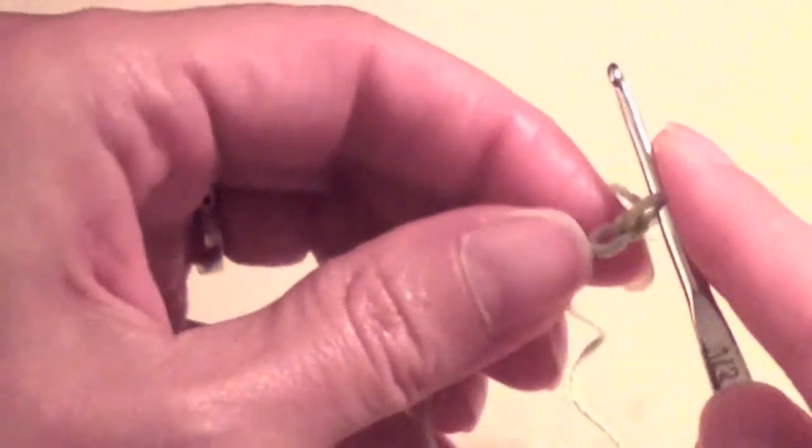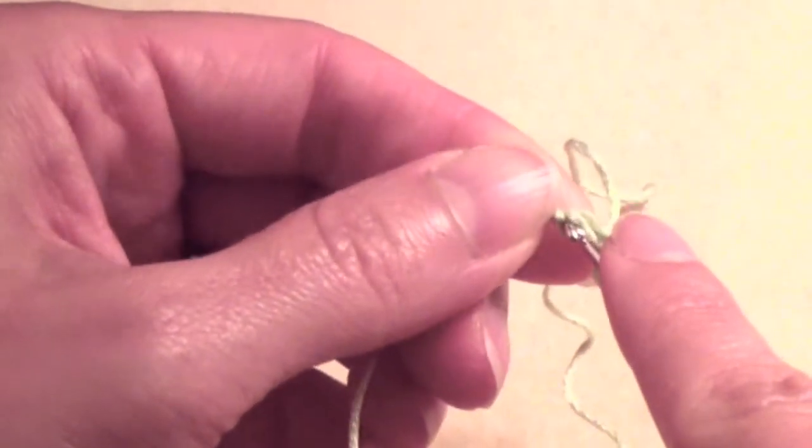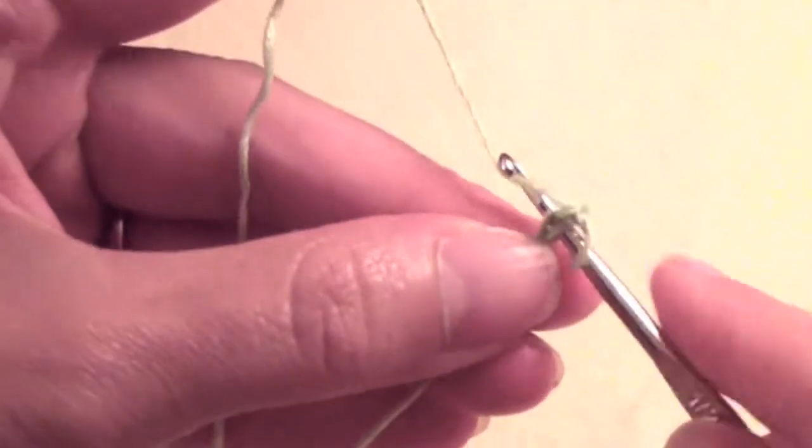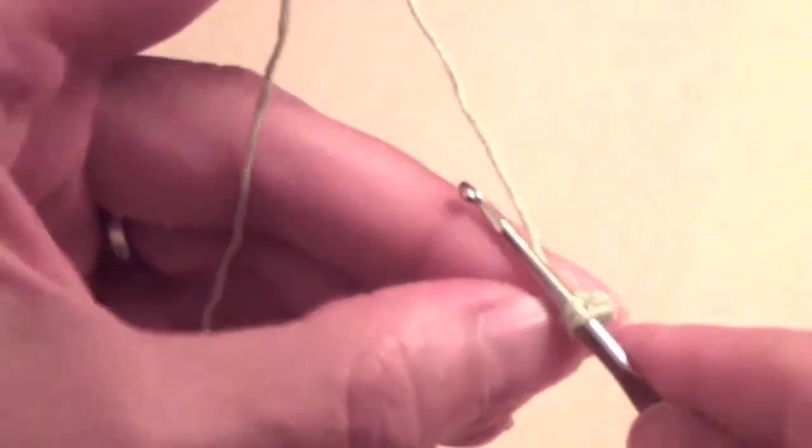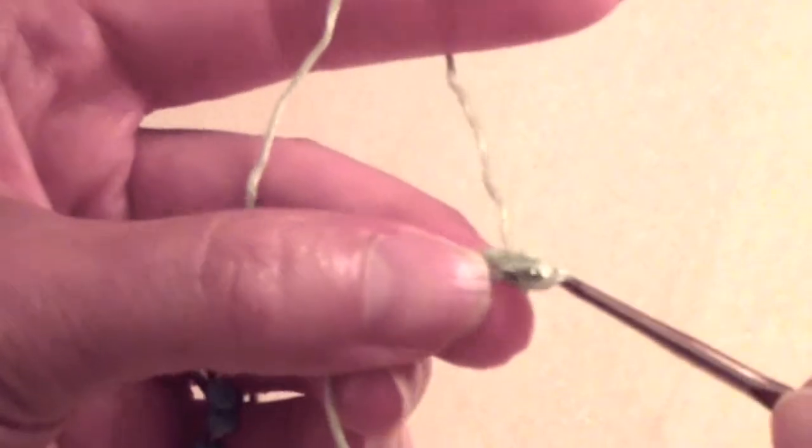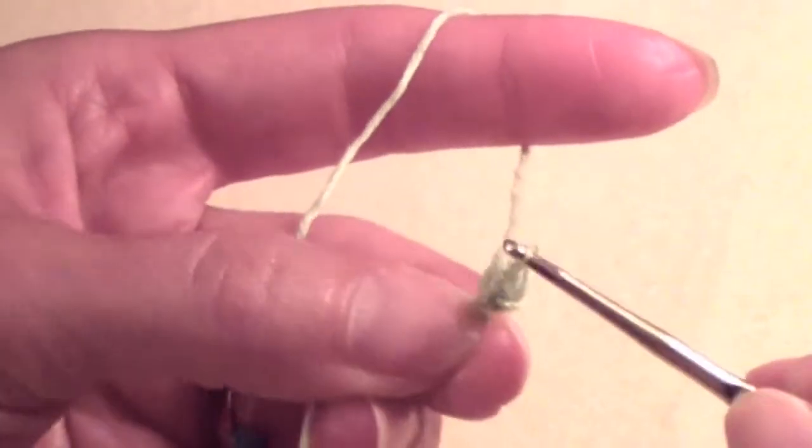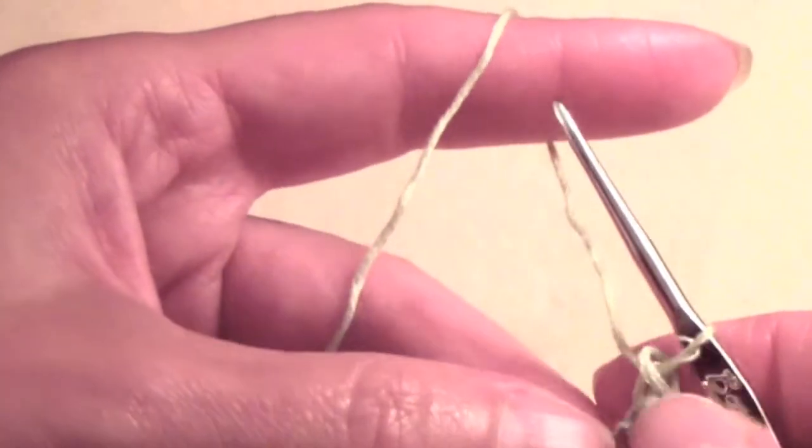Now you're going to make a single crochet stitch into the first chain. And you can tighten this up later.